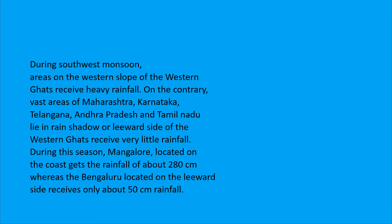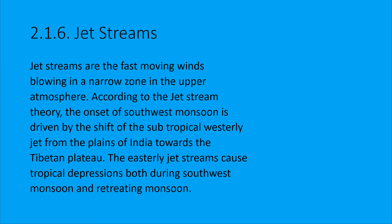For example, Mangalore, which is located on the coast, receives about 280 cm of rainfall, while Bengaluru, which is in the rain shadow area, receives only about 50 cm of rainfall. The sixth factor is jet streams.